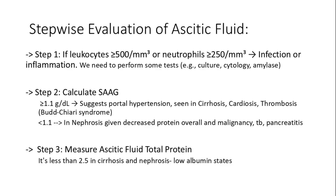Evaluation of ascitic fluid begins with identifying signs of infection or inflammation. If the total leukocyte count is greater than 500/mm³ or the neutrophil count is greater than 250/mm³, this suggests a possible infectious or inflammatory process such as spontaneous bacterial peritonitis. Additional diagnostic tests including culture, cytology, or amylase levels should then be performed.